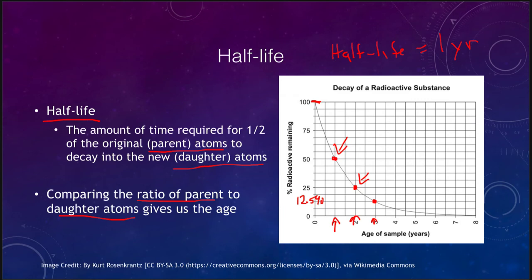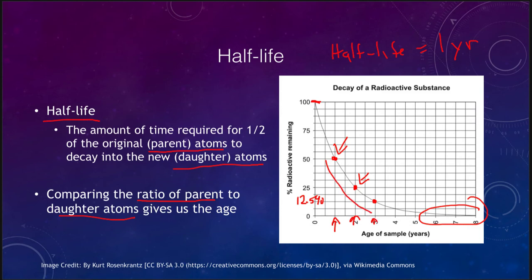This method works very well when the decay curve is changing quickly. When you get out to the far end, it doesn't work very well — it's very hard to get the difference between six, seven, and eight half-lives. That's why we look for minerals that have half-lives where several half-lives would be about the approximate age of the rock.